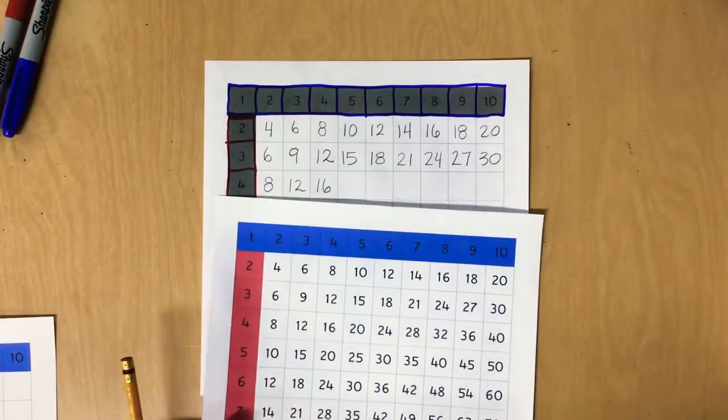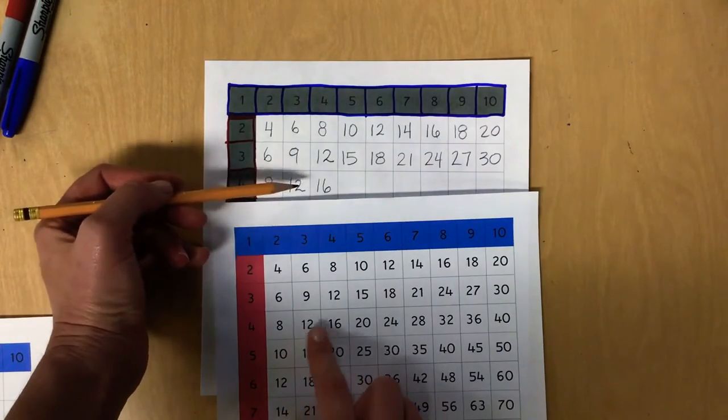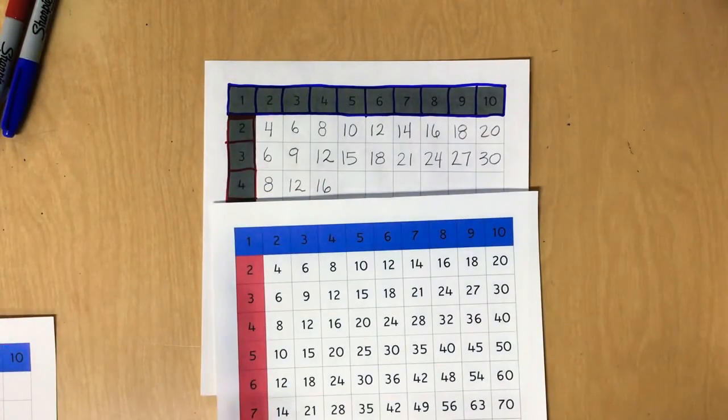All right, so you are going to complete this row and then remember when you're all done you can use your control chart to check it. Oh, and it's getting a little trickier, isn't it? Because look at how far we are. Make sure you're on the right row. All right, see you next time, friends.